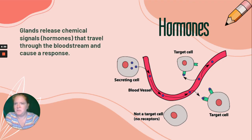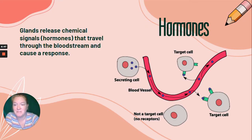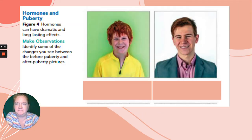What about hormones? Hormones are chemical signals that come from glands, and they travel through the bloodstream to cause a response. For example, adrenaline — when adrenaline is released, your pupils dilate, your heart races, your breathing rate increases. It's responsible for that fight-or-flight response.